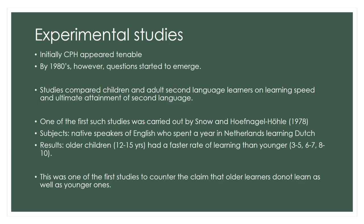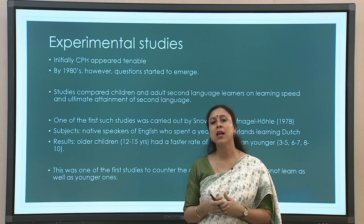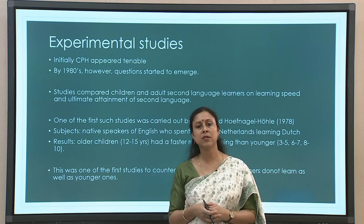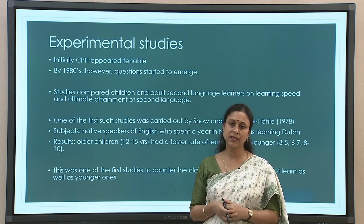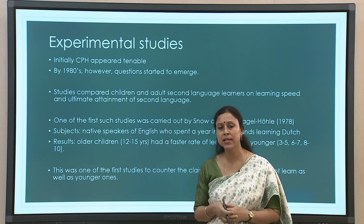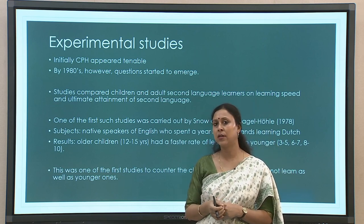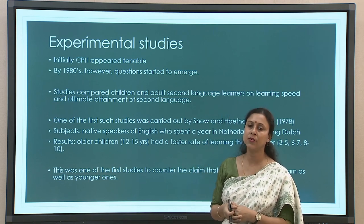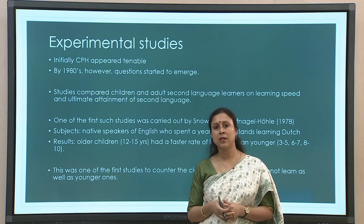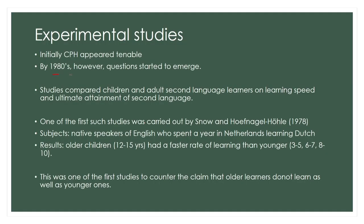Initially the critical period hypothesis gained quite a bit of popularity and seemed quite tenable. Research on cases like Genie and Isabel and many other studies supported it — there was a clear difference in terms of age. Children who started learning language much later in life were found to be lacking in certain skills, whereas children who learned it early, before the critical period, were doing pretty well. However, by the 1980s questions started to emerge as new data challenged this view.